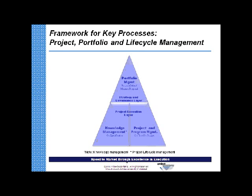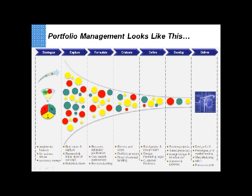Looking at some of the sub-processes within portfolio management, we're really talking about the onboarding process — how an organization builds a strategy and captures ideas about how to meet that strategy. This includes the key metrics required: return on investment, amount of risk, benefit to the organization, alignment with overall organizational objectives, how we evaluate and select those ideas, and how we then define detailed plans and move into delivery.